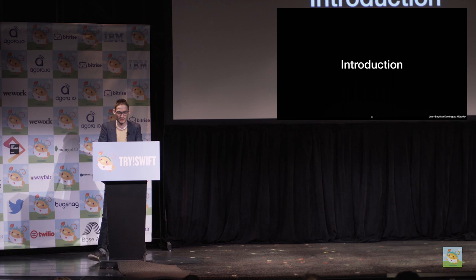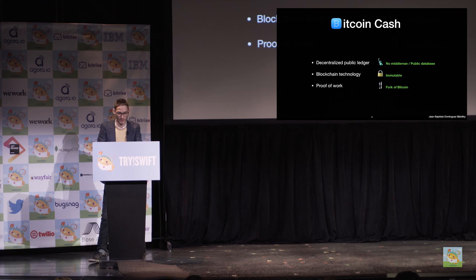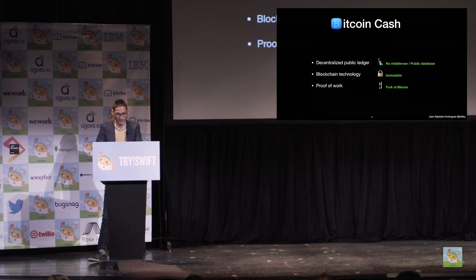So what is Bitcoin Cash? It's a decentralized public ledger, no middleman, public database — you can send instantly a transaction without any third party. It's a blockchain, so it's immutable; nobody can change the ledger, or it's very difficult, and it's relying on mathematical proofs. Bitcoin Cash is a fork of Bitcoin, so the block generation is based on proof of work.